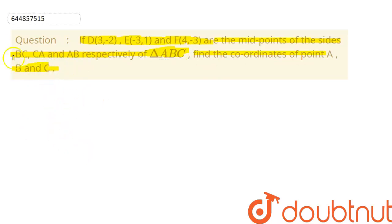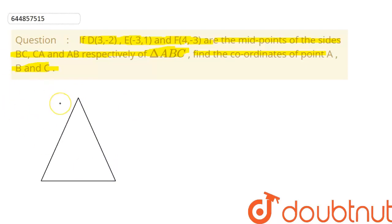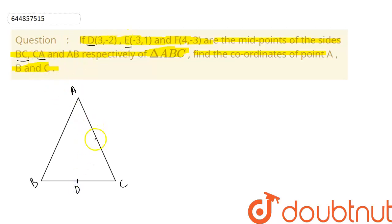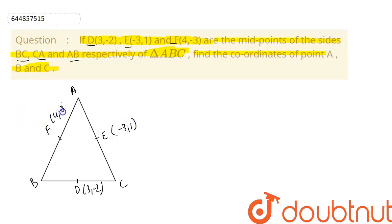Let us visualize this question using a diagram. We have triangle ABC — vertex A, point B and point C. Point D lies on the BC side, point E lies on the CA side, and point F lies on the AB side. The coordinates of point D are (3, -2), E is (-3, 1), and F is (4, -3).